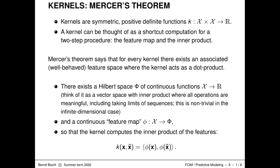In a certain sense, this tells us that what we are doing with all of these kernel functions is mathematically reasonable — there exists a space where the kernel really acts as a dot product. For each kernel function of this type, there exists a Hilbert space capital Phi of continuous functions that map from the input space curly X to R.